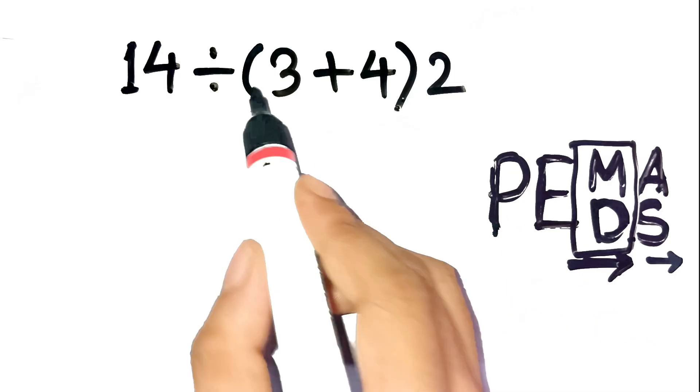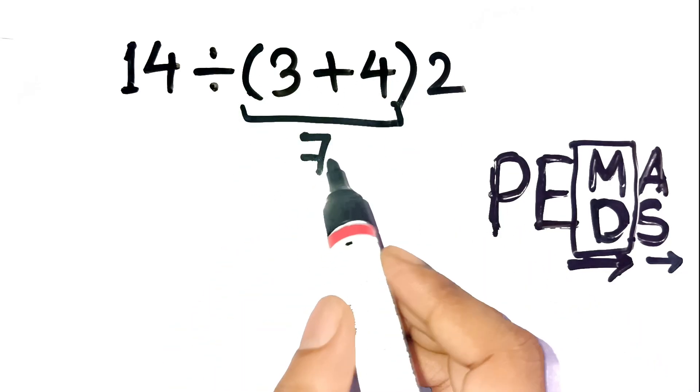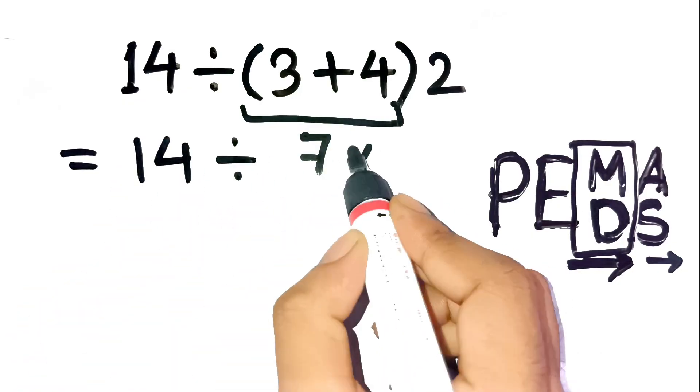Step 1, parentheses first. Inside the parentheses, we have 3 plus 4, which equals 7. So now the expression becomes 14 divided by 7 times 2.